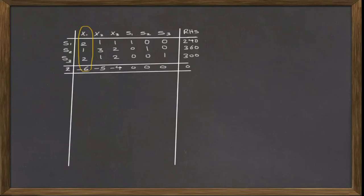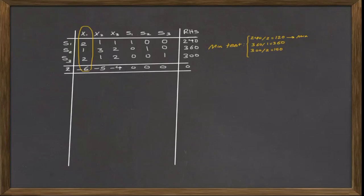Now that we have defined what variable will enter the basis, we have to find the variable that will leave the basis in the next table, and x1 will replace that variable. To define the variable that leaves the basis, we use a test called the minimum test. In the minimum test, we divide the right-hand side of the problem by the positive values of the pivot column and find the minimum value among those. The row associated with the minimum value is called the pivot row and defines the exiting variable. In this example, the minimum value of the minimum test is related to the first row of the simplex table, or in other words, the slack variable of the first constraint. So this row is called the pivot row. The intersection of the pivot row and the pivot column is called the pivot value, which in this example is 2.